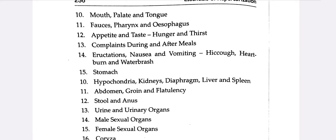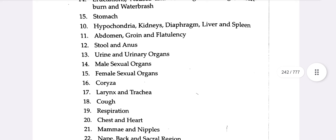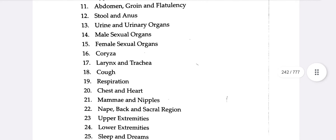Further chapters include: Hiccups; Heartburn or Water Brash; Stomach; Hypochondria; Kidney; Diaphragm; Liver; Spleen; Abdomen; Groin; Flatulency; Stool and Anus; Urine and Urinary Organs; Male Sexual Organs; Female Sexual Organs; and Coryza.